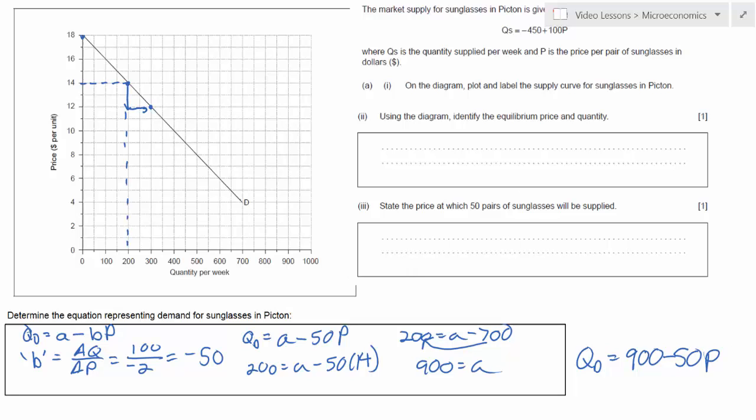Notice that 900 is easily seen here because if I continue my demand curve down that is my quantity intercept of demand. The a variable is always the quantity demanded at a price of 0. So we've got our equation. We've solved the first problem in this exercise.